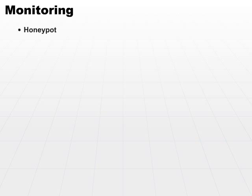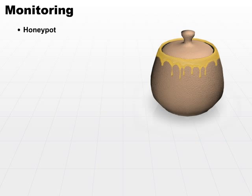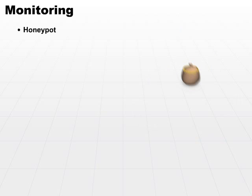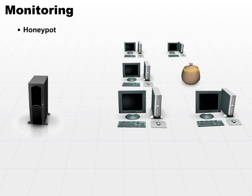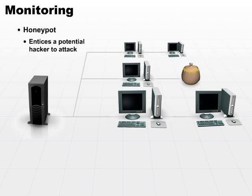Another way to monitor hackers is to use a honeypot. The use of a honeypot is very controversial because what it does is it segments an area or perhaps an entire machine onto a portion of your network and opens up certain services and ports, making it enticing for a potential hacker to find the honeypot and attack the machine.